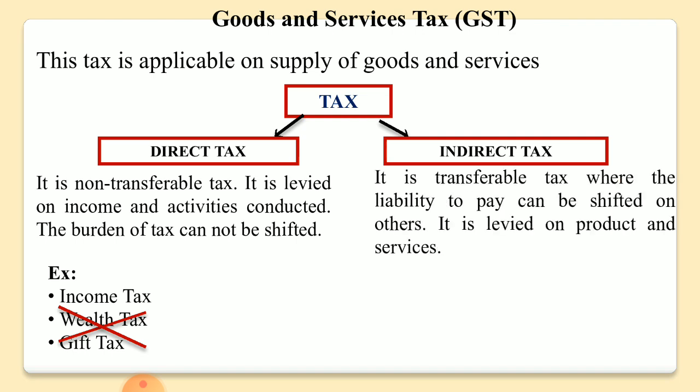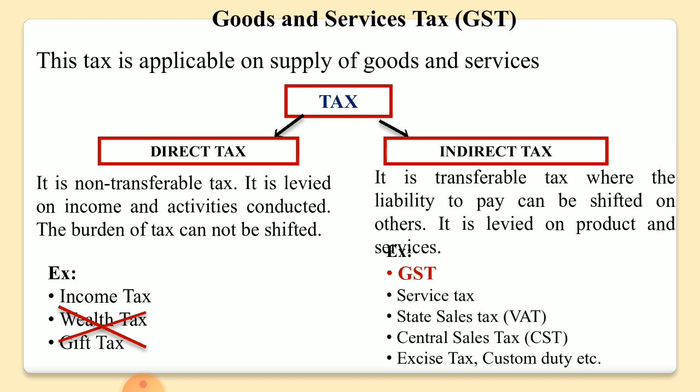If we talk about indirect tax, indirect taxes are transferable taxes. It means we can shift the burden of tax from one person to another person — that tax liability can be shifted from one person to another. Indirect taxes are levied on products, on goods and services. Like for example, GST.